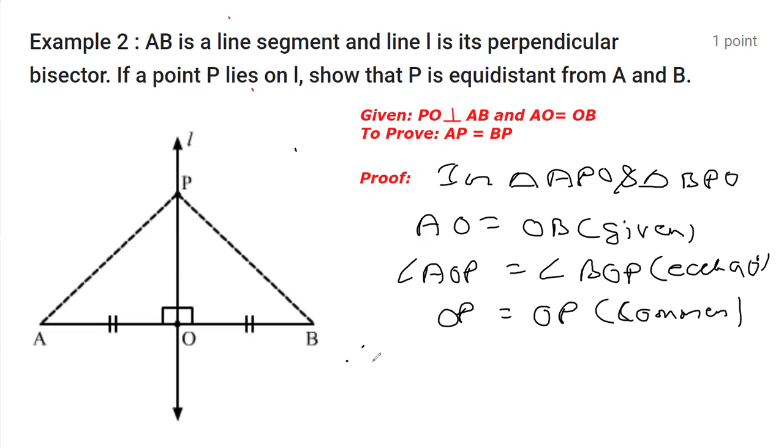So what does it mean? Triangle APO is congruent to triangle BPO, and the congruency condition that we applied is clearly side-angle-side. So once these two triangles are congruent, we can write AP equals BP, and that is from CPCT—corresponding parts of congruent triangles.